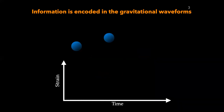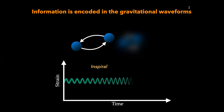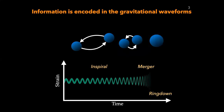Let's say you have two black holes rotating around each other — that's what we call the in-spiral phase. During this in-spiraling phase, they emit gravitational waves. At this period, the frequency and amplitude of the gravitational wave more or less stay constant. The amplitude and frequency only go up toward the end of the in-spiral, when the orbit of the binaries shrinks, all the way until they merge.